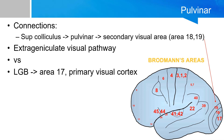The secondary visual cortex is involved in processing higher-order visual information. Because there is a separate pathway — with the lateral geniculate body going into the primary visual cortex (area 17) and the pulvinar going into the secondary visual cortex — this pulvinar pathway is considered part of the extrageniculate visual pathway. More on the superior colliculus will be covered in the brainstem video.